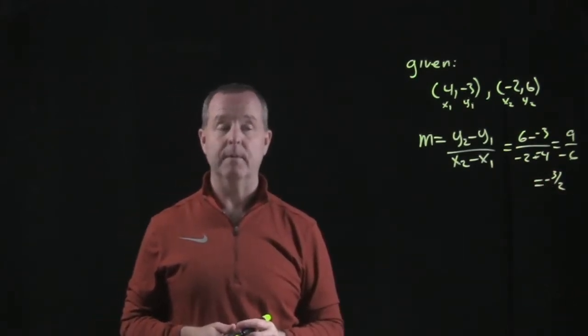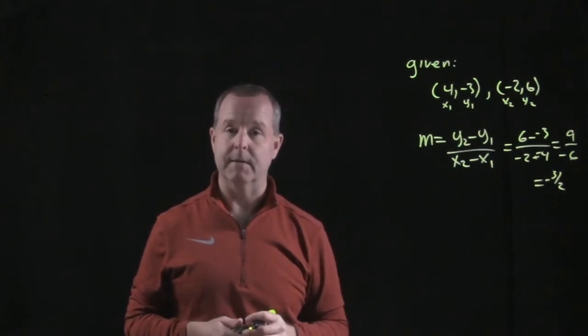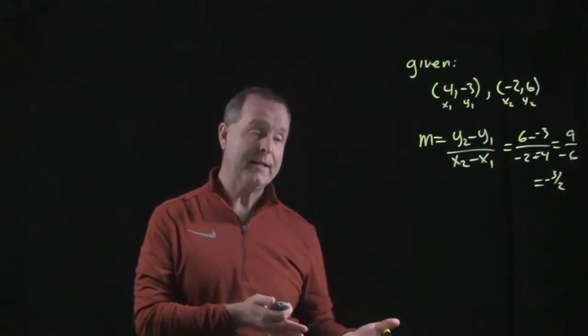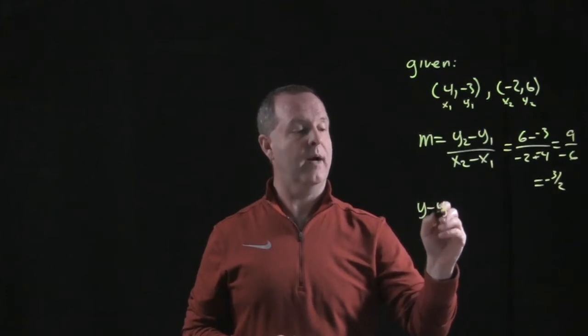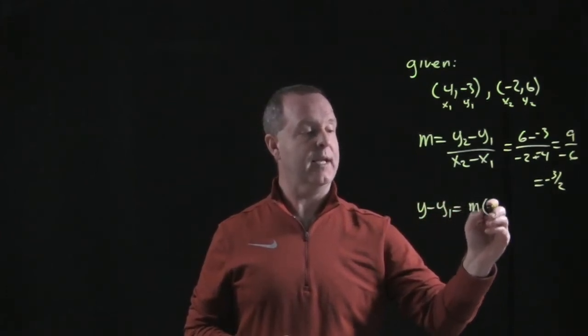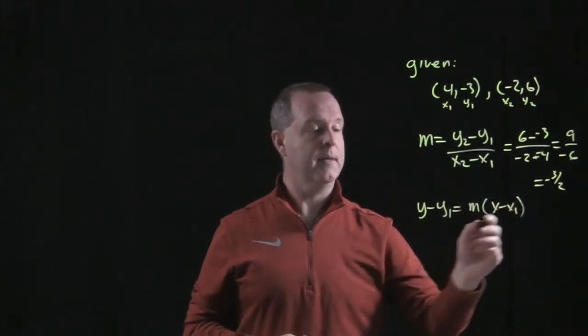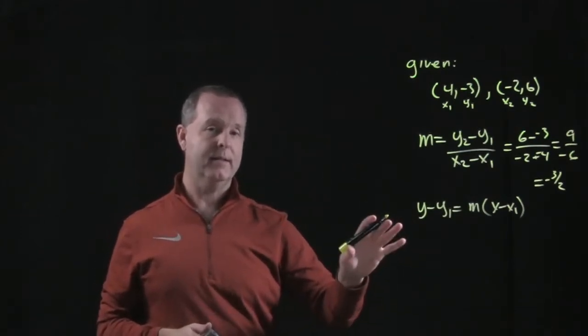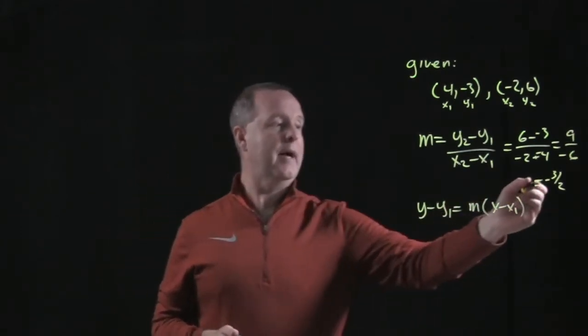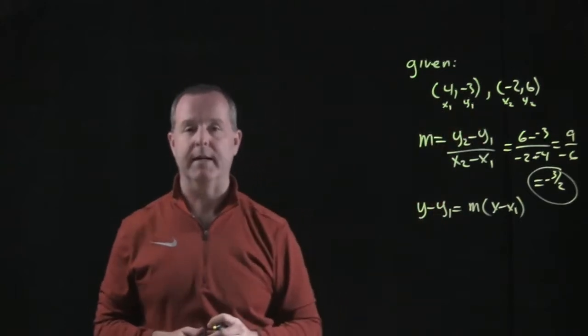So I have a slope that equals negative 3 halves. To use point-slope, which says y minus y1 equals m times x minus x1, I need a point and a slope. So I now have a slope, but I also have two points.